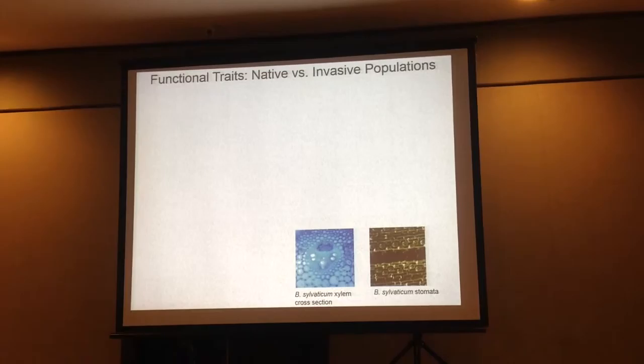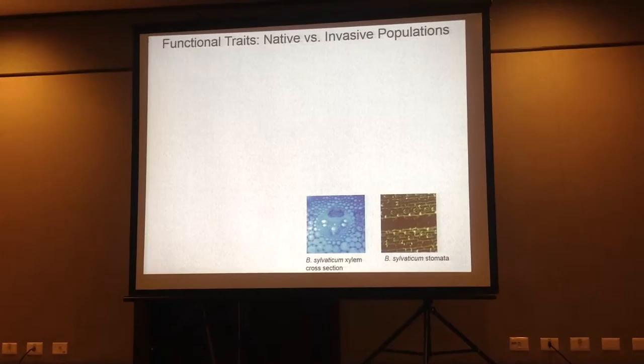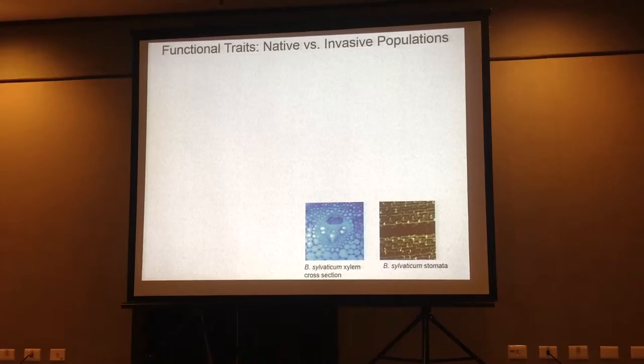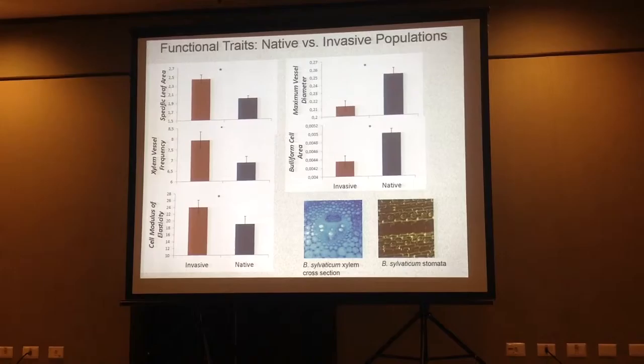I measured 13 functional morphological and physiological traits in populations from invasive and native regions. These are just two examples looking at xylem morphology, stomatal density, and leaf anatomy. I found that five of the traits I measured were significantly different between invasive and native regions.